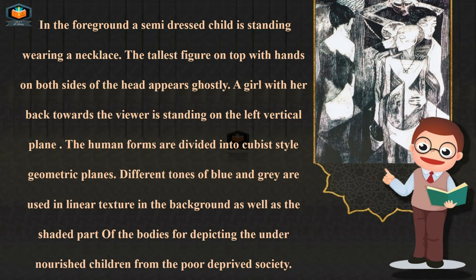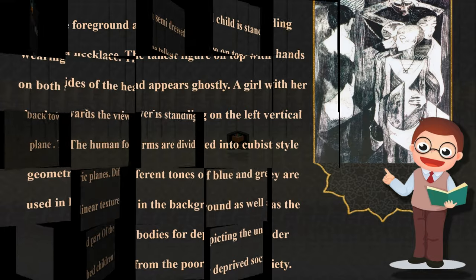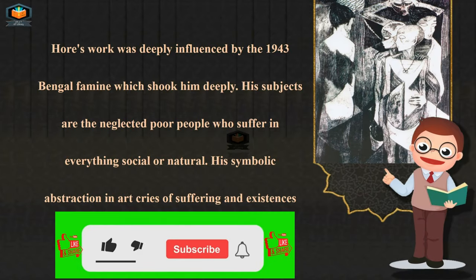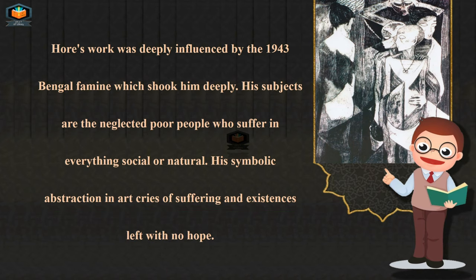Different tones of blue and grey are used in linear texture in the background as well as the shaded parts of the bodies, for depicting the undernourished children from the poor, deprived society. The artist was deeply influenced by the 1943 Bengal famine, which shook him deeply.